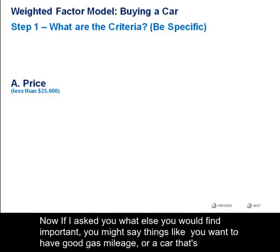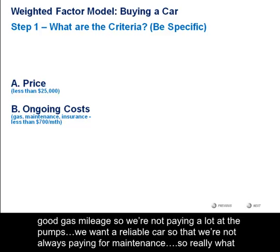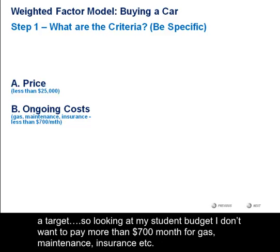Now, if I asked you what else you would find important, you might say things like you want to have good gas mileage or a car that's reliable. But if I was to push back and ask you why those things are so important, we'd probably boil it down to ongoing costs. We want good gas mileage so we're not paying a lot at the pumps. We want a reliable car so that we're not always paying for maintenance. So really what we're saying here is that we want a car that's going to be affordable on a monthly basis. And if we're going to be specific about it, we might actually set a target — looking at my student budget, I don't want to pay more than $700 a month for gas, maintenance, and insurance.